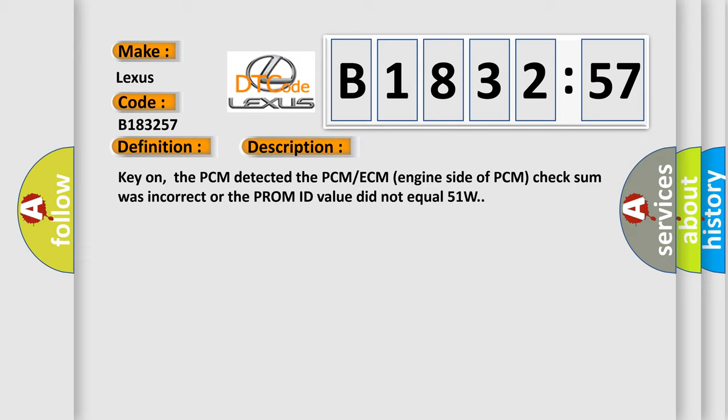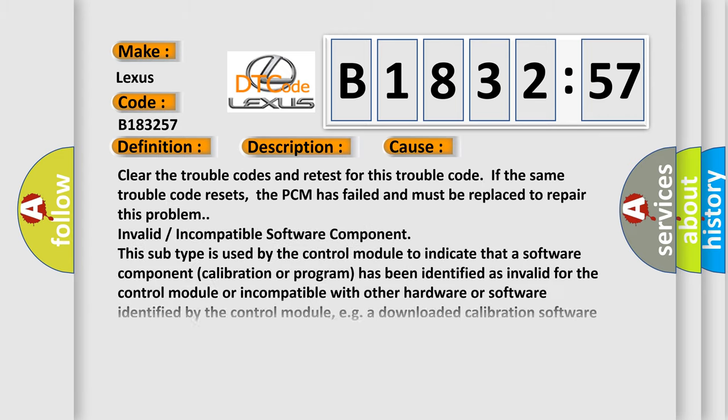And now this is a short description of this DTC code. Key on, the PCM detected the PCM ECM engine side of PCM checksum was incorrect or the PROM ID value did not equal 51W.